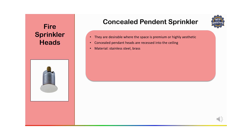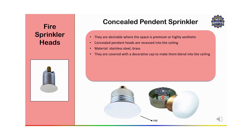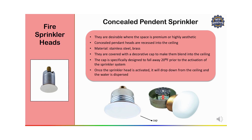Concealed sprinklers are made of stainless steel or brass. They are covered with a decorative cap designed to blend into the ceiling. The cap is specifically designed to fall away at 20 degrees Fahrenheit prior to the activation of the sprinkler system. Once the sprinkler head is activated, it drops down from the ceiling and the water is dispersed.